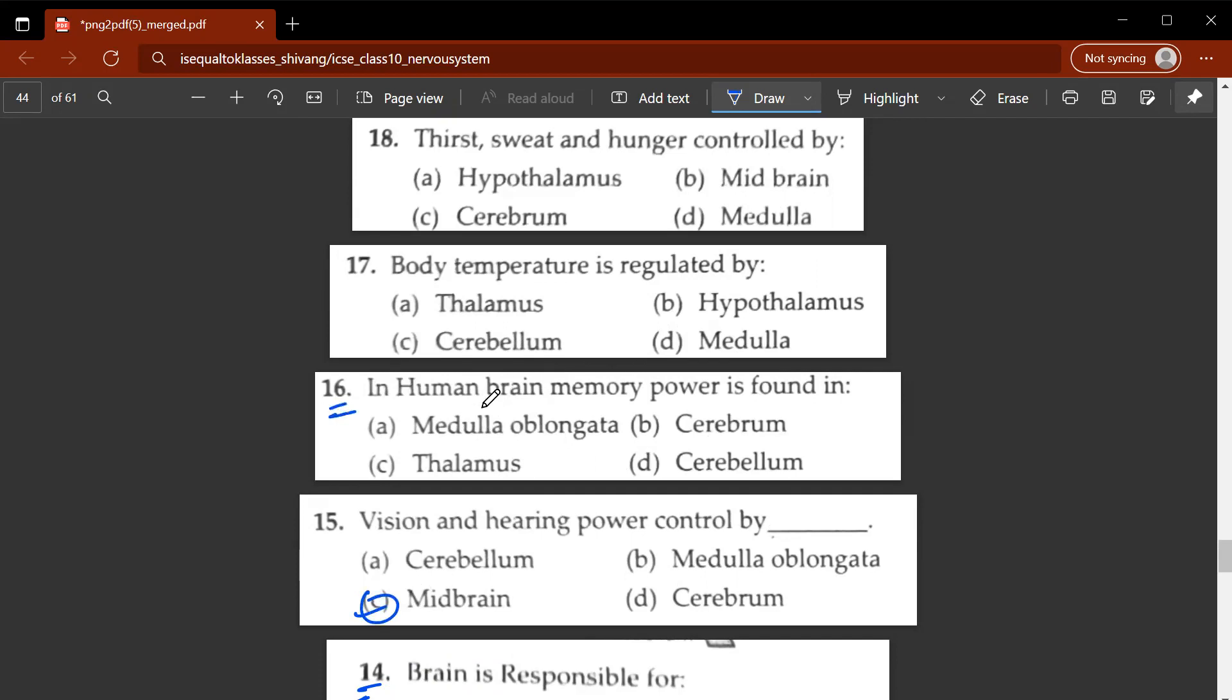Sixteenth question, in human brain, memory power is found in which part of the brain? It is found in the cerebrum. Seventeenth question, body temperature is regulated by the hypothalamus. Eighteenth. Thirst, sweat and hunger are controlled by hypothalamus. So body temperature, thirst, sweat and hunger are controlled by the hypothalamus.